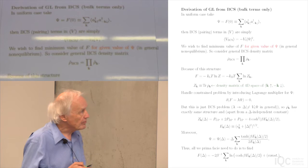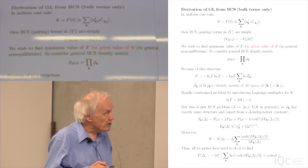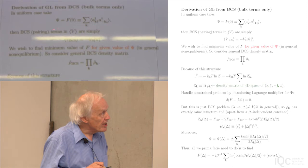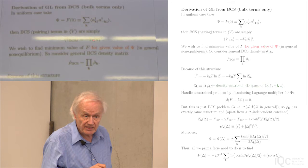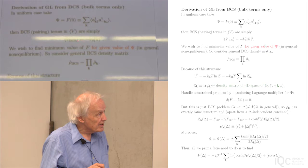This has the nice property that, quite independently of whether I am in equilibrium or not, the BCS pairing terms in the potential — just the ones involving anomalous averages — are always given by the simple expression here. That's completely independent of whether I'm in or near equilibrium or not. So that term is straightforward.